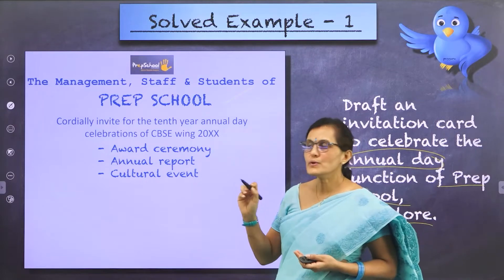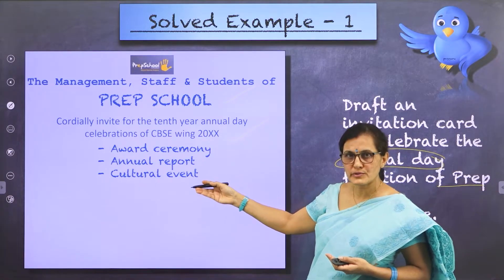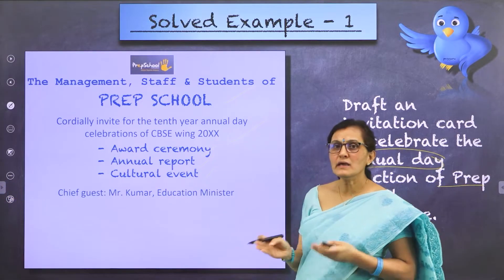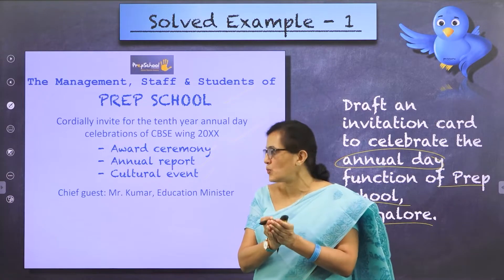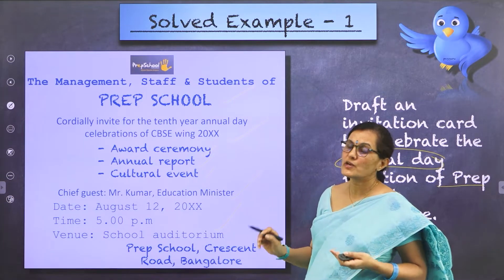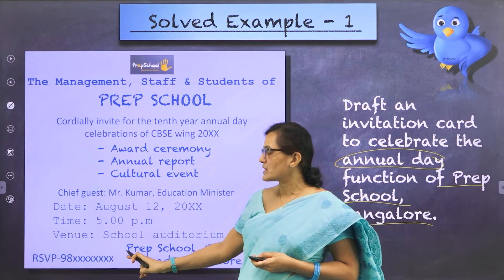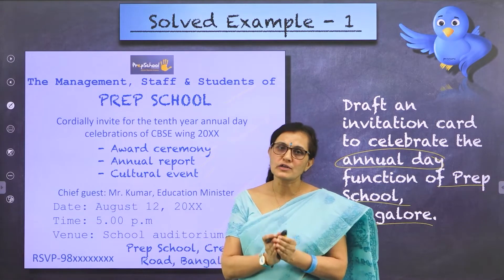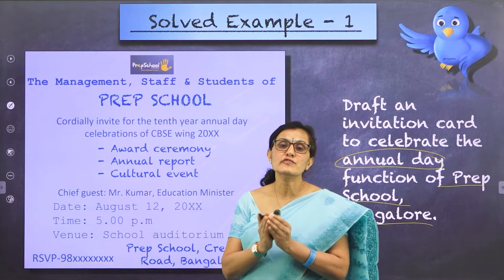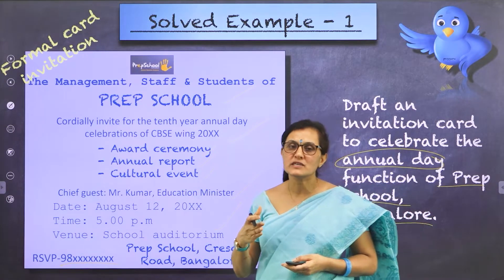As a third person, write: the management, staff, and students of Prep School cordially invite for the 10th year annual day celebration of CBS Ewing 20XX, with details of the program — award ceremony, annual report, cultural event, etc. If you have a special invitee, put their name there. Then the date, time, and address follow. Since it is a formal invitation, you need a reply — so RSVP and the contact number in the format 98XXX. This is how your formal card invitation looks.